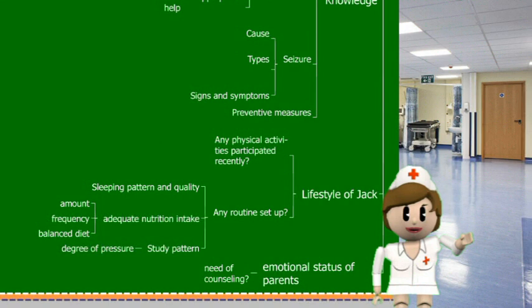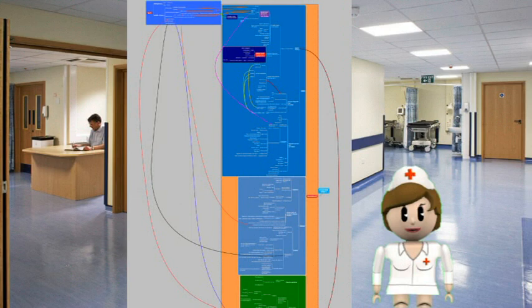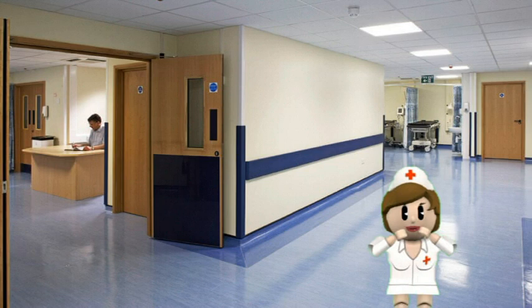In conclusion, this concept map presented the three assessment parts — Jack's assessment, school assessment, and parents' assessment — in order to understand Jack's condition from different aspects. This helps in constructing a full-dimensional care plan to cope with Jack's disease. This is the end of the presentation. Thank you.